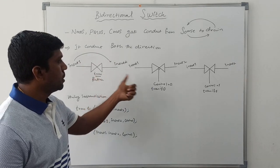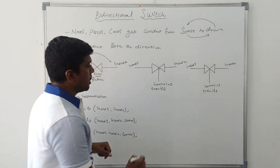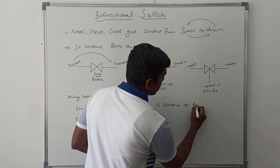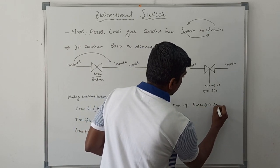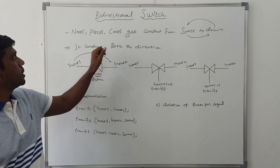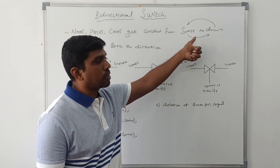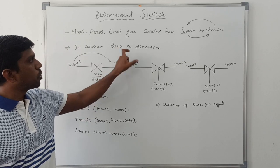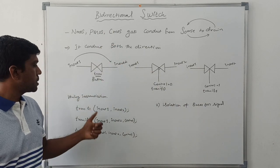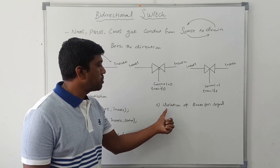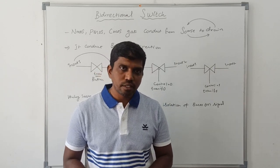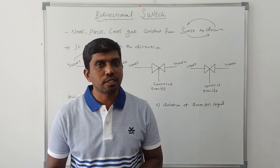These are the Verilog instantiations for the three bi-directional switch symbols. This bi-directional switch is mainly used for isolation of buses or signals. In summary: NMOS, PMOS, and CMOS conduct from source to drain, but the bi-directional switch conducts in both directions. I hope you understood the concept. If you are watching for the first time, kindly subscribe and support us. Thanks for watching.